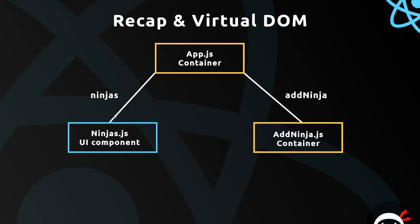Now when the state changes — the ninjas over here — the ninjas prop is going to update, which is passed down to this component. And whenever the props update inside a component it's going to re-render the template because it needs to, so we get the updated ninjas and we re-render the template based on that new data. The same is true for if we ever want to delete a ninja — we pass down the delete ninja function from this component to this component.